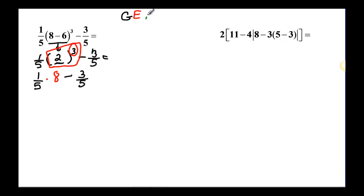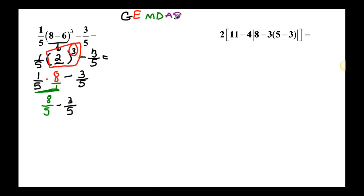Then we have multiply and divide, and I have a multiplication right here. So 1 fifth times 8 — remember we can write this as 8 over 1, so 8 times 1 is 8 and 5 times 1 is 5 — giving us 8 fifths minus 3 fifths. We're done with multiplication and division. Last we have addition and subtraction: 8 fifths minus 3 fifths, or 8 minus 3 over 5 because they're all fifths, gives us 5 over 5, or 1.